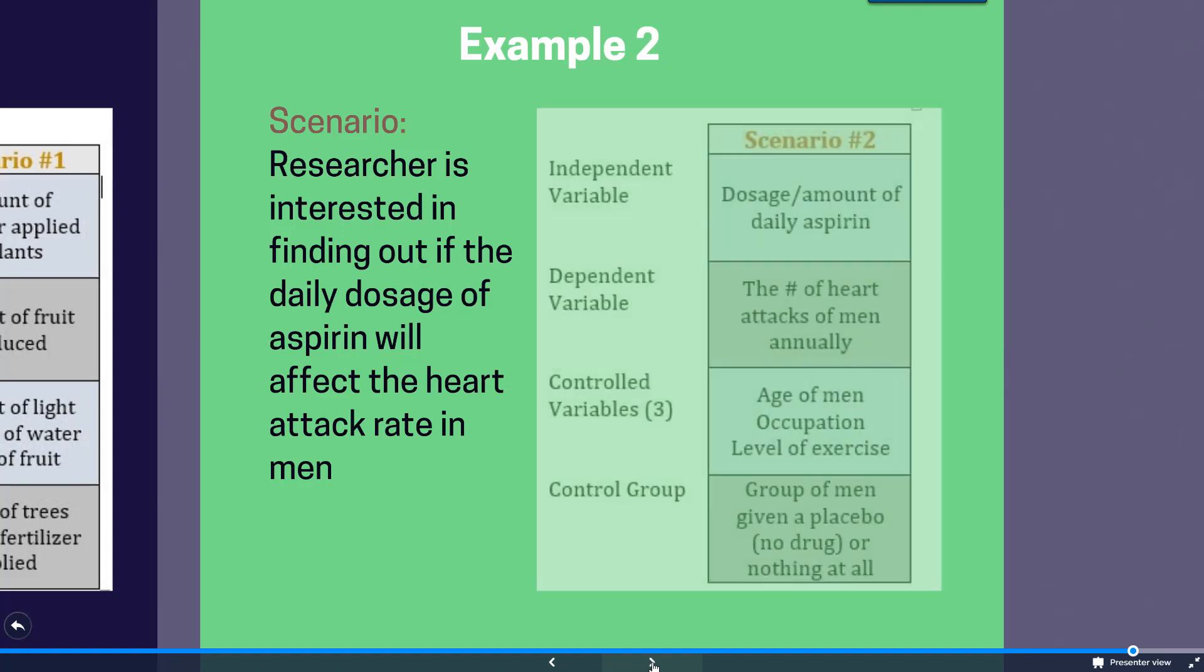All right, so in looking at our response here, an independent variable would be the dosage or the amount of daily aspirin. A dependent variable would be the number of heart attacks of men annually, because that's the thing you're measuring. The controlled variables, a couple of them might be the age of the men, their occupation, their level of exercise. And finally, a control group is going to consist of men that are given a placebo or no drug, or a group of men that are given nothing at all. The reason why we have placebos in medical experimentation is because of the fact that oftentimes there's a psychological component to these medical case studies, as nobody wants to get a heart attack.